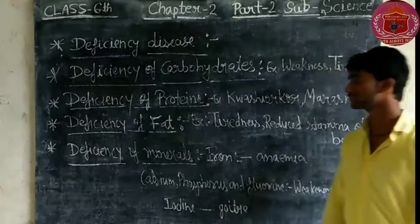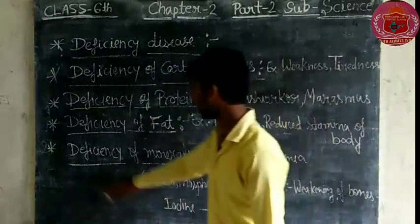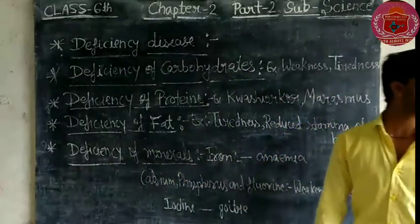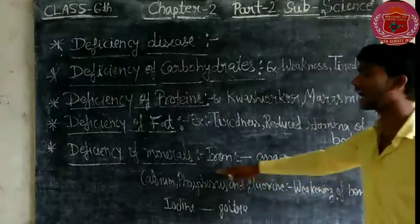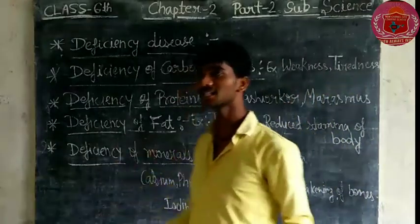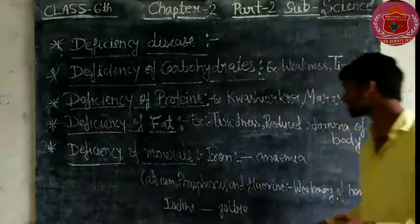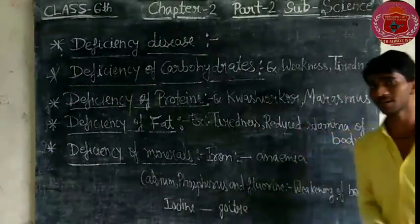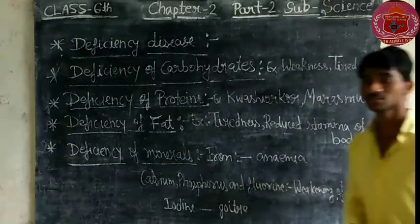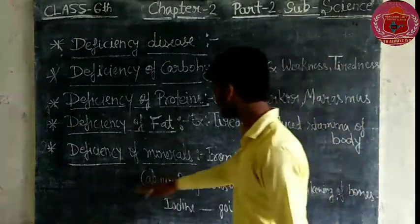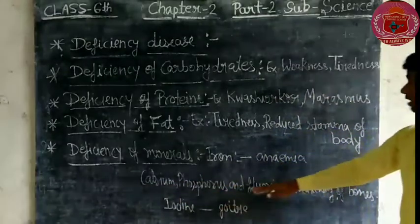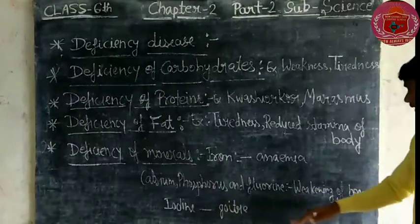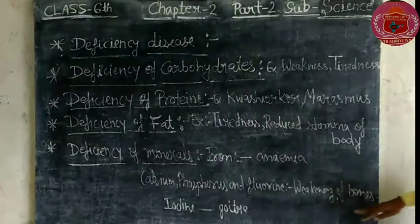The fourth is the deficiency of minerals. There are many minerals. First is iron — if we lack iron in our body, our blood is reduced, which leads to anemia. Second is calcium, phosphorus, and fluorine — deficiency of these leads to weakening of bones.